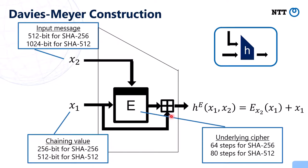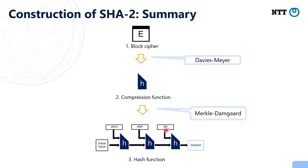Actually, this operation is not a modular addition in SHA-2, but the operation does not play a significant role, so I will not explain details here. In summary, SHA-2 is built as follows: a block cipher is converted into a compression function using the Davies-Meyer construction, and then converted into a hash function of variable input length using the Merkle-Damgård construction.